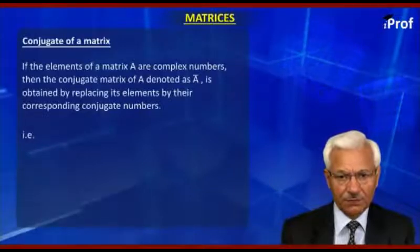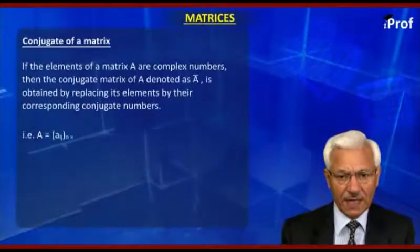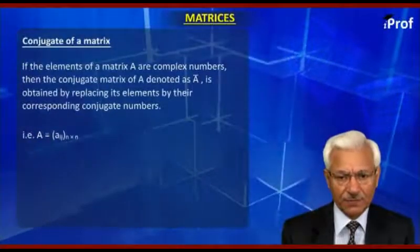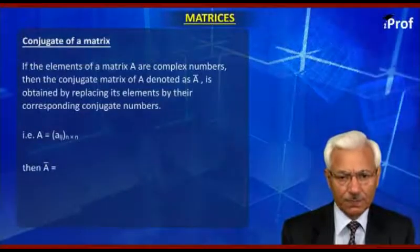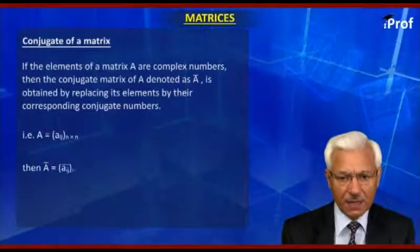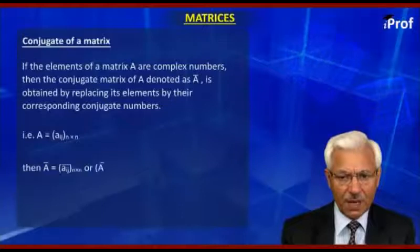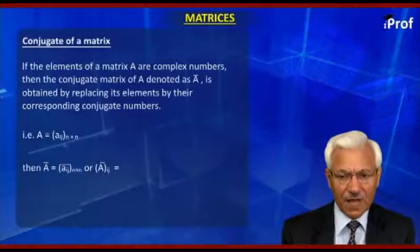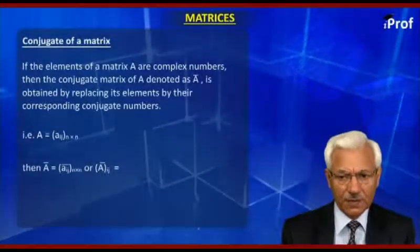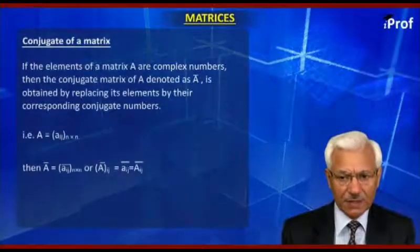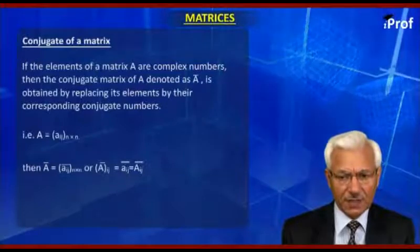That is, if A is equal to [Aij] of order N×N, where Aij belongs to the complex set, then A-bar is equal to [Aij-bar] of order N×N. In other words, the (i,j)-th element of A-bar is equal to Aij-bar, that is the conjugate of the (i,j)-th element of A.